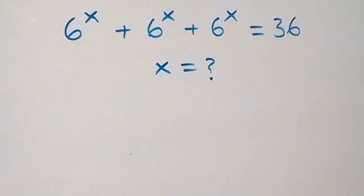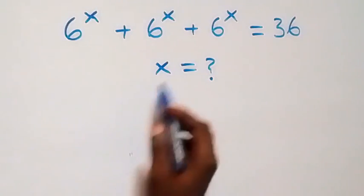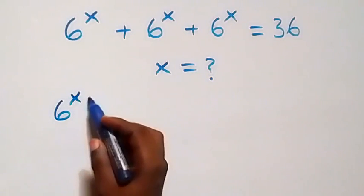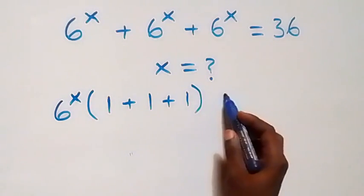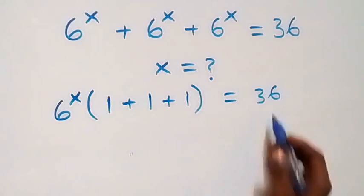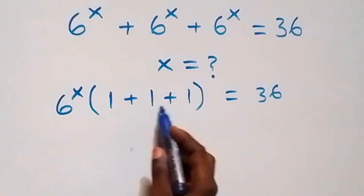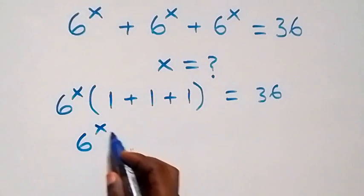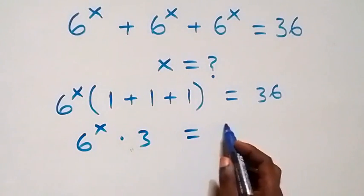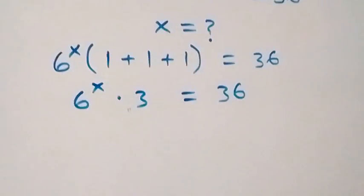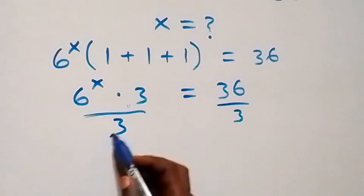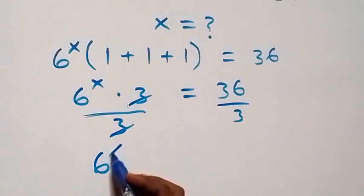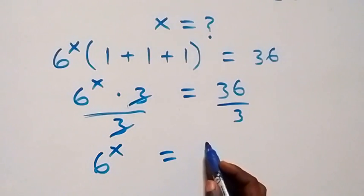Hello, you are welcome. How to solve for x in this nice exponential equation. From what we have, we can factor 6 raised to power x out, and we have 1 plus 1 plus 1 left inside, which equals 36. So 1 plus 1 plus 1 is 3, giving us 6 raised to power x times 3 equals 36. Dividing both sides by 3, the 3s cancel, leaving 6 raised to power x equals 12.